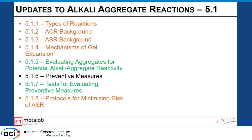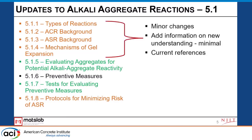Here's our outline for the first half of the chapter, which is our AAR section. The sections in orange had very minimal changes. Sections in green had some significant changes. Sections in black really didn't change at all. Our minor changes to the early sections really just updated the state of the art on how ACR — alkali carbonate reaction — and alkali silica reaction occur, updating our references and making sure everything is current. Our understanding of these has changed in specific technical ways in the last seven years, but the broader process is still roughly the same.